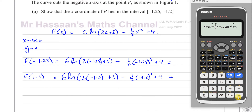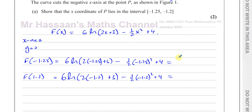That should give us a negative value according to the way the graph looks, and it does: negative 0.9401.